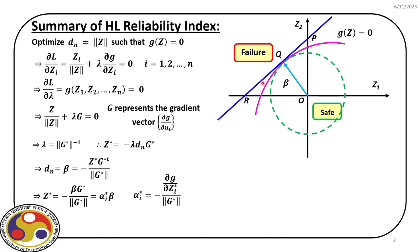Let us quickly go through all the steps. We started with the limit state gx equal to 0, and then we first convert that to gz equal to 0, where z represents the standard normal space. The reason is the definition of reliability index is actually defined in the standard normal space, where it represents the shortest distance to the point of first failure — that point we call the most probable point of failure.